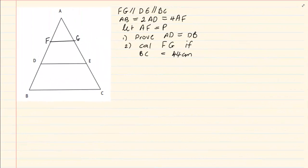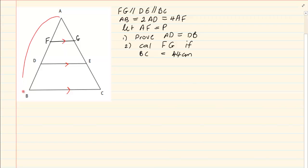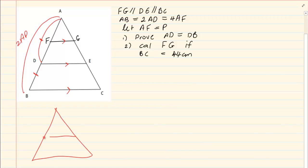So let's look at the following one. It says that FG is parallel to DE, and DE is parallel to BC. It also says that AB is equal to 2 of AD. As soon as they say that, what are they saying? They are saying that BD is equal to AD — that it is cut exactly in the middle. You also have that it's parallel. All this information is given.